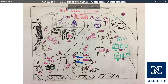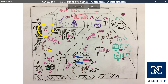To summarize Chediak-Higashi syndrome: it's named for the cheetah and yak mnemonic, caused by a defect in the CHS gene that encodes for LYST, leading to an inability to fuse lysosomes and vesicles.